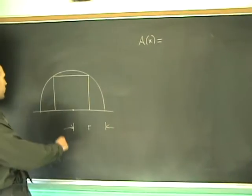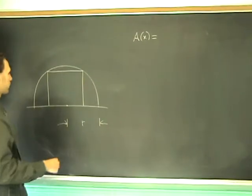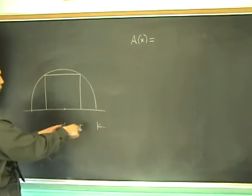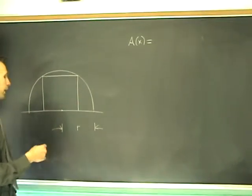The problem is to optimize the area of a rectangle inscribed in a semicircle, as shown, of radius R. How do you do it?